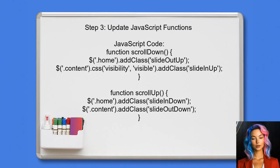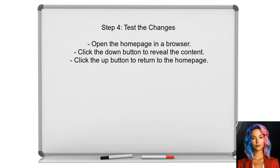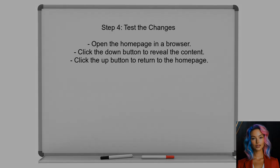Now, the user needs to modify the JavaScript functions for scrolling. The scroll down function should reveal the content when the user clicks the down button, while the scroll up function should bring the user back to the homepage. Finally, the user should test the changes to ensure that the homepage displays correctly without any unwanted white space and that the scrolling functionality works as intended.